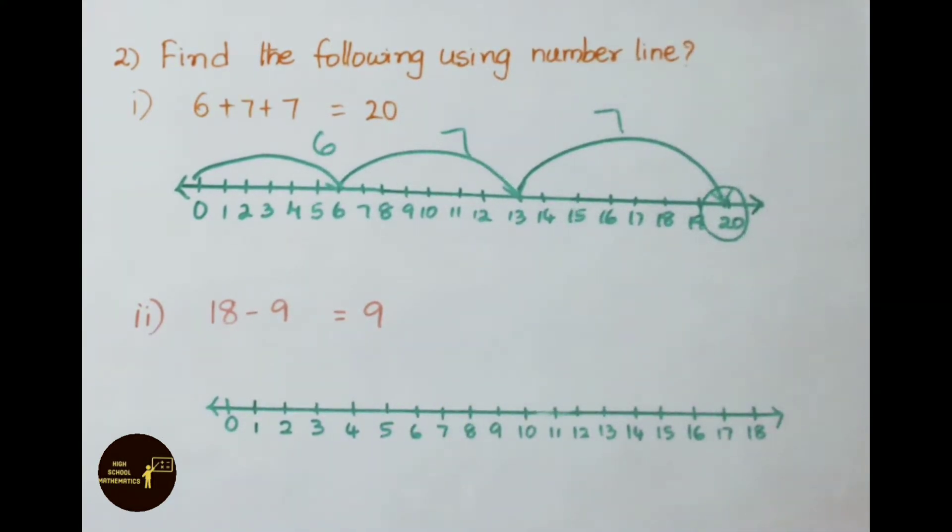See the second part: 18 minus 9 equals 9. Now show this on the number line. Mark from 0 onwards to 18. Now from 18 backwards, count 9 numbers: 1, 2, 3, 4, 5, 6, 7, 8, 9. So from 18 you mark to 9. Therefore, 18 minus 9, we get answer 9.